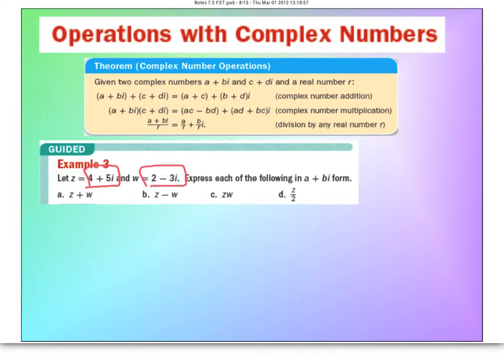It's actually very easy to do. I'm just going to substitute z, which is 4 plus 5i, and then I'm going to add to it w, which is 2 minus 3i.